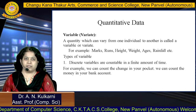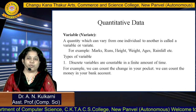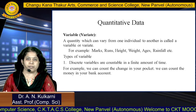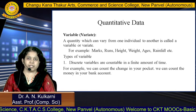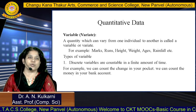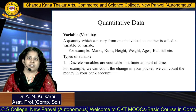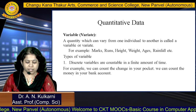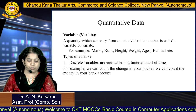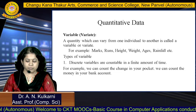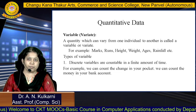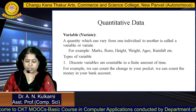Next, moving to quantitative data. Under that, we first consider what a variable is. A variable is a quantity which can vary from one individual to another. For example, marks, runs, height, weight, age, and rainfall all come under variables. Marks may be different for different students.